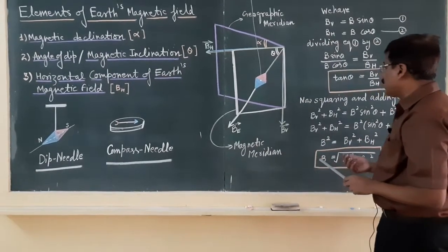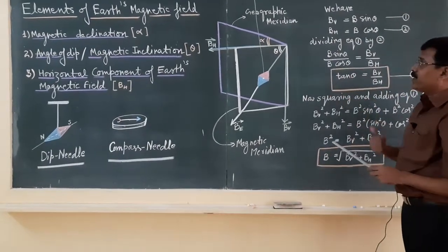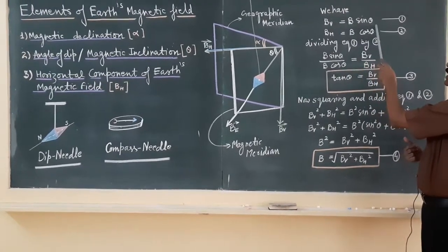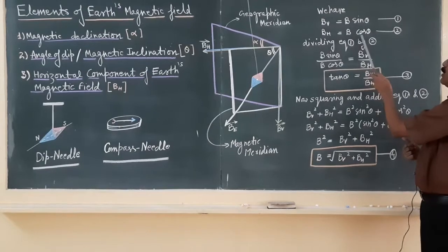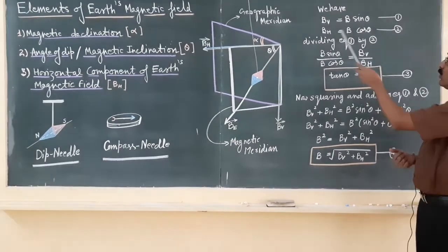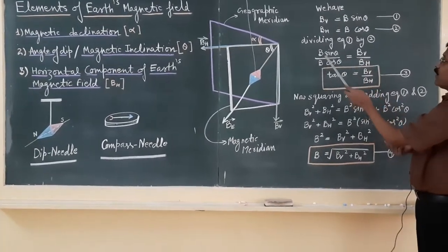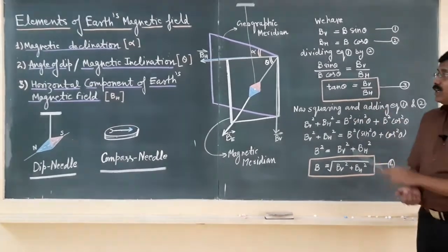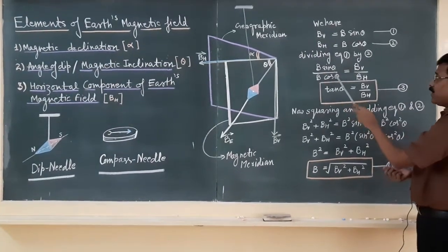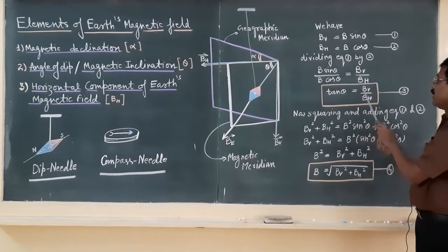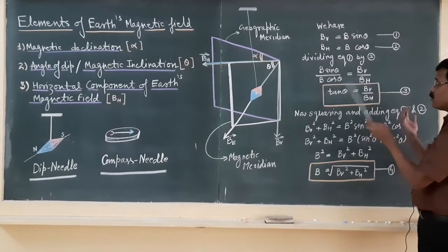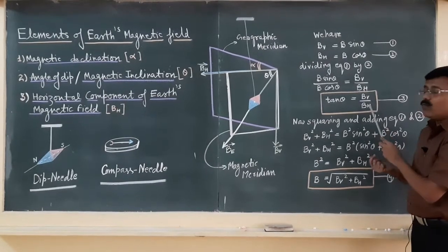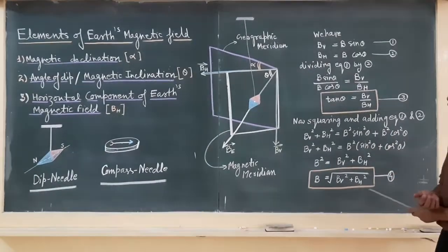Now see what the relation between these three terms. Already we know the vertical component is given by B sin θ, the horizontal component is given by B cos θ. If we divide equation 1 by 2, simply we have B sin θ by B cos θ is equal to BV by BH. So sin θ upon cos θ is equal to tan θ, that is BV by BH. So you can also say that the tangent of angle of dip is ratio of the vertical and horizontal component of the magnetic field.